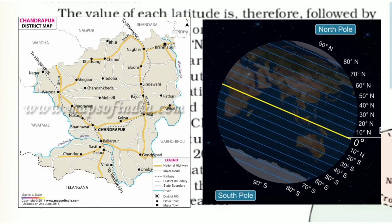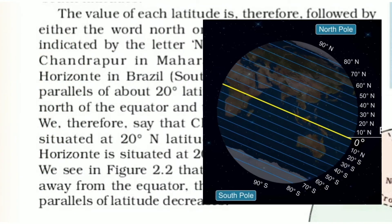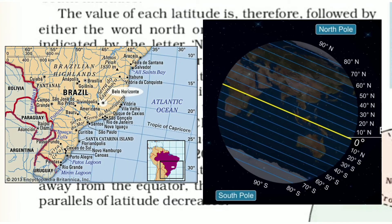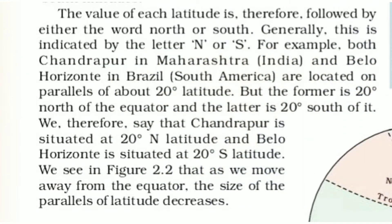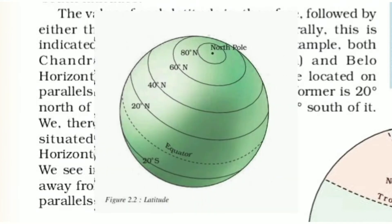लेकिन जो चंदरपूर है, वो 20 degree North पर है Equator के, और जो Belo Horizonte है, वो 20 degree South पर है। तो मतलब यह है कि चंदरपूर 20 degree North Latitude पर situated है, और Belo Horizonte 20 degree South Latitude पर situated है। अब figure में देखो — जैसे हम Equator से दूर होते जाएंगे, जो Parallels of Latitude का साइज है, वो कम होना शुरू हो जाएगा।